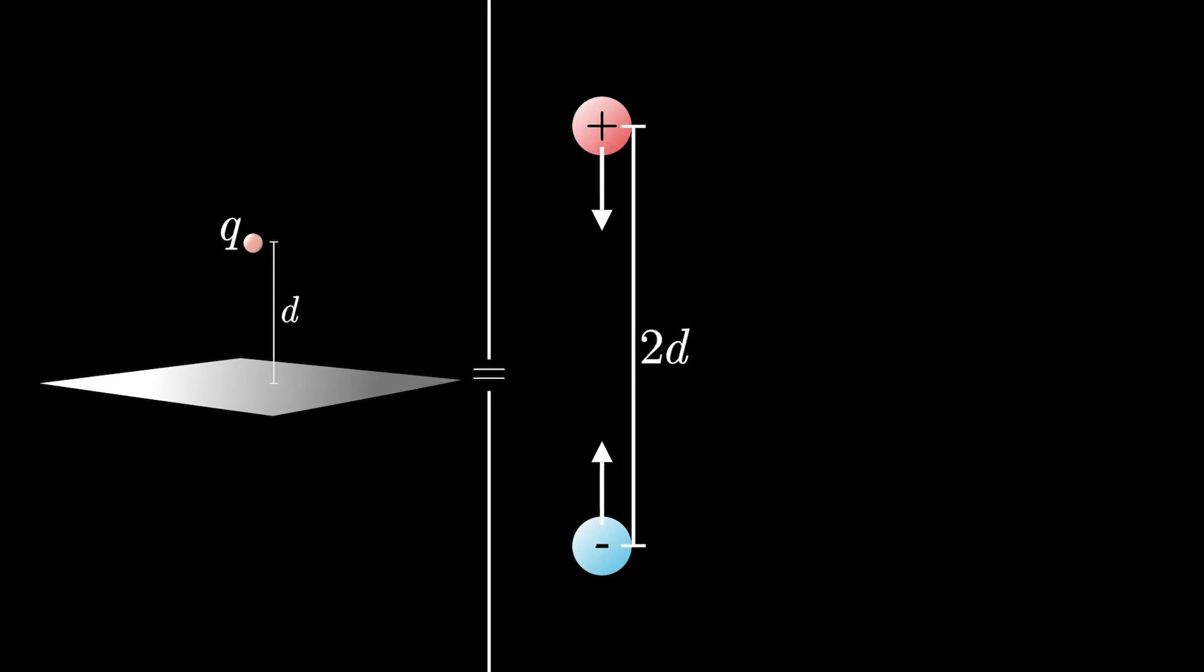So if the charge is a distance d away from the plate, the force is simply kq squared over 4d squared toward the plate. We're just finding the force from our reflected image charge, and this process is called the method of images.